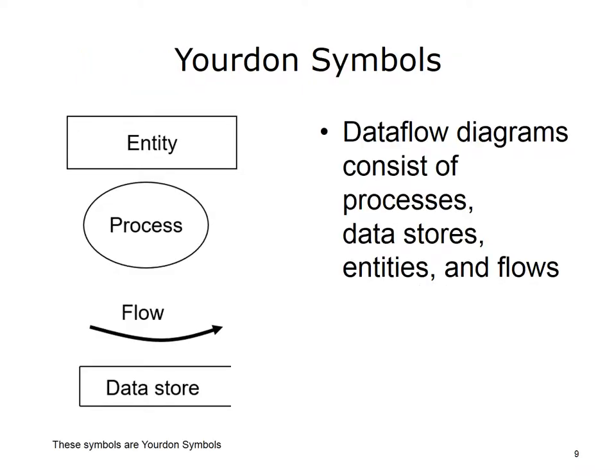Entities are origins or consumers of data, also called terminators. They are typically individuals, groups of people — for example, another department or division within the organization — external computer systems, and external organizations. Entities are referred to as external entities because they are outside the process being analyzed, i.e., not changeable. For example, in the previous diagram, the patient is not part of the receptionist's intake process, but the patient's information is an input to the process.